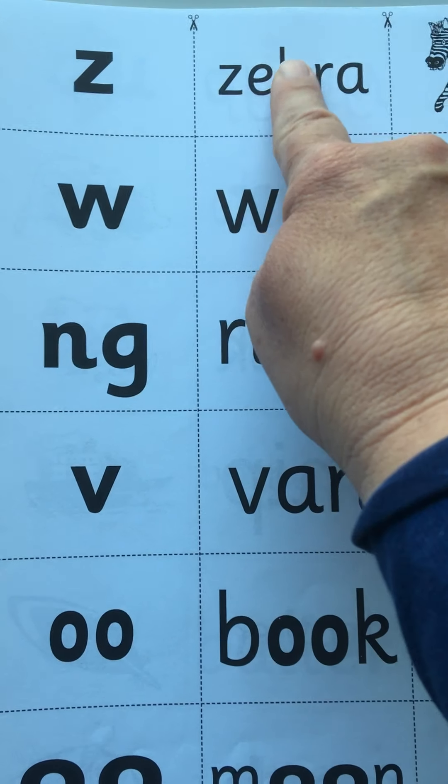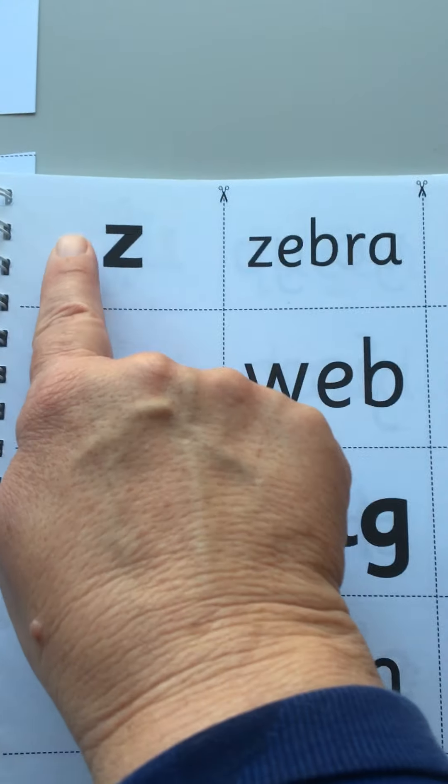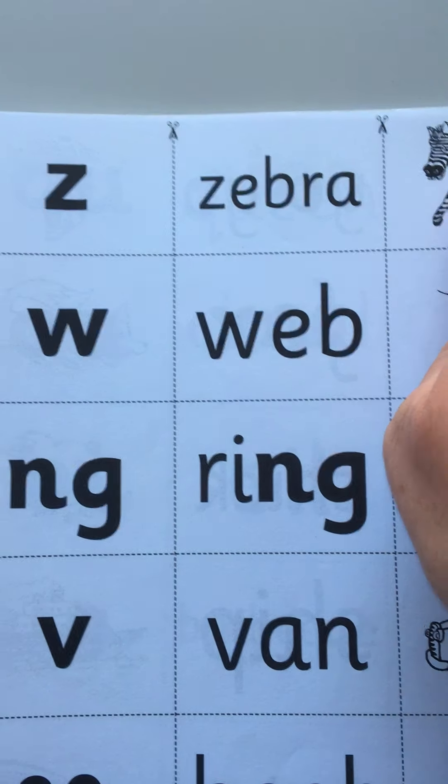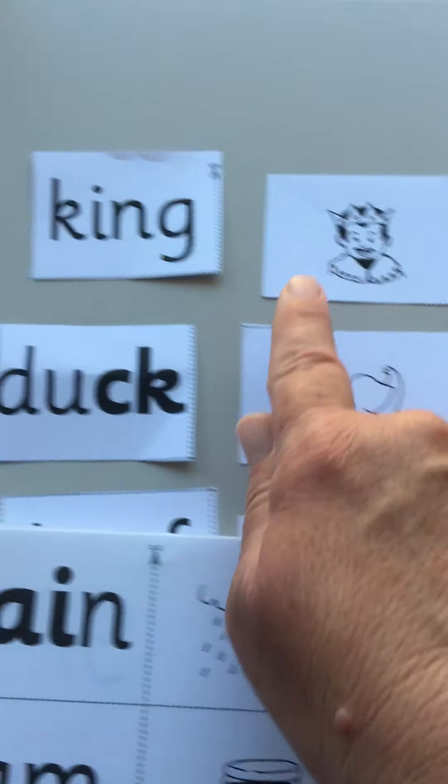So I'm gonna go a little bit faster. I want you to put down the sound and then try and find the word and the picture, because you're gonna read across. Remember, this is not the same letters.